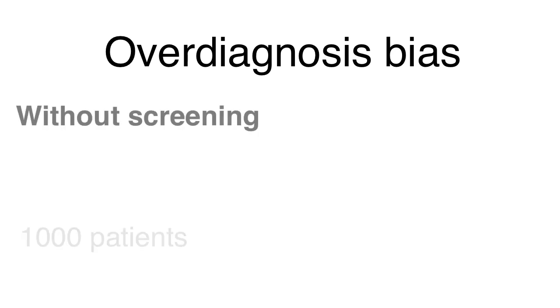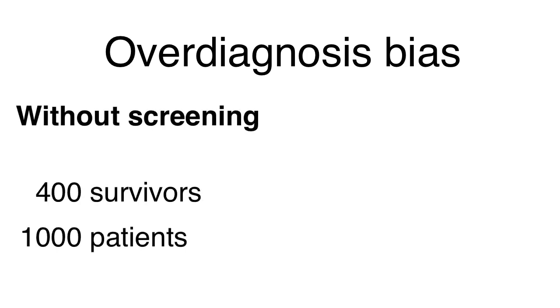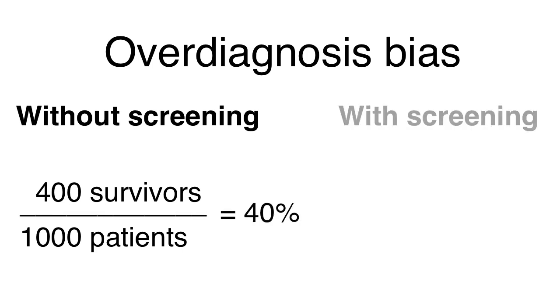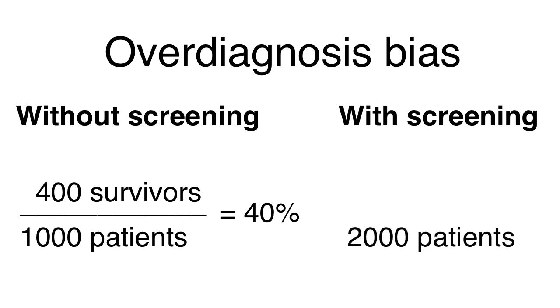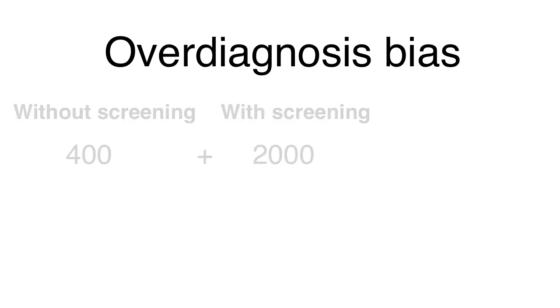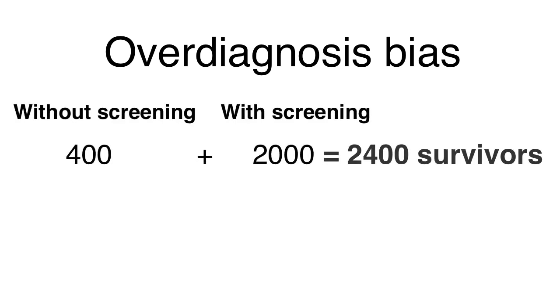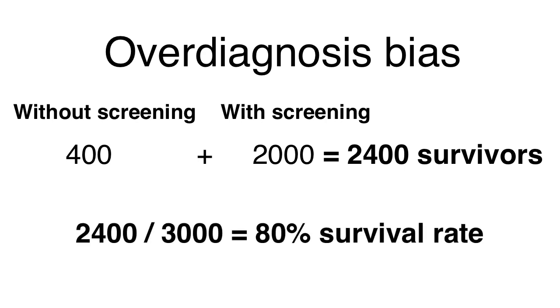The other trick used to mislead us is over-diagnosis bias. Without screening, out of 1,000 people with advanced cancer, only 400 are alive five years later — a 40% five-year survival rate. But if you over-diagnose 2,000 more people with cancers that would have never caused a problem or would have disappeared on their own, those people should survive five years since the cancer was harmless. Adding those 2,000 survivors to the 400 with severe cancers gives 2,400 survivors out of 3,000 — an 80% five-year survival rate — even though the same number of people died from cancer.